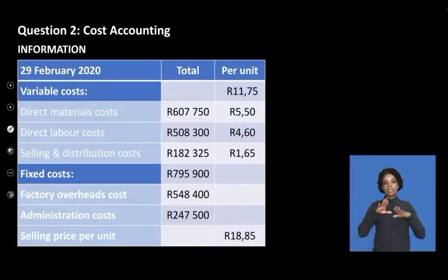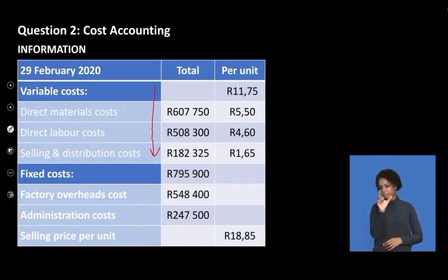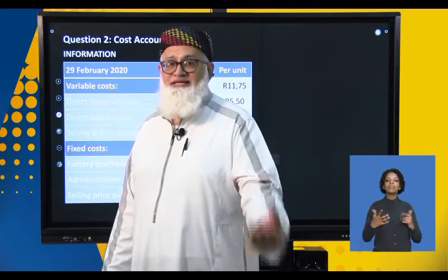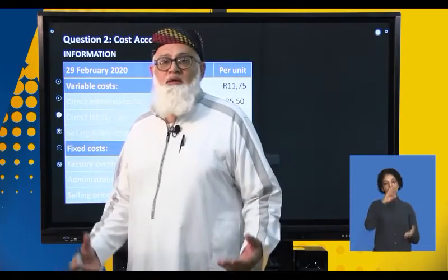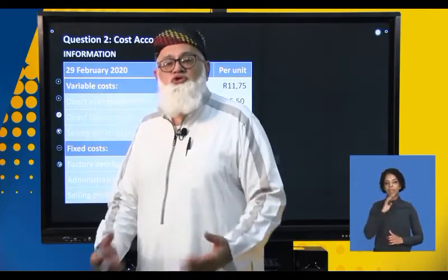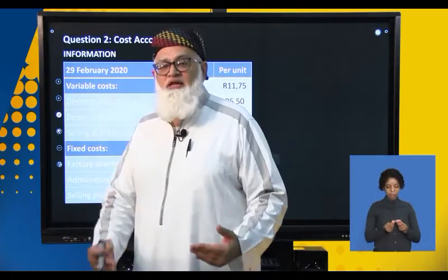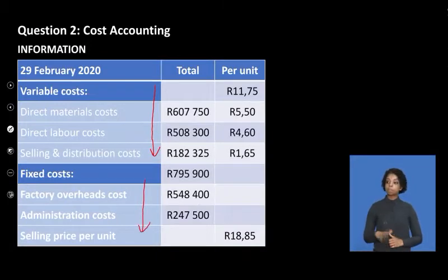This is the information we have. Our variable costs — know what they are. A variable cost is a cost that varies with the levels of production. As production increases, variable costs increase. For example, as your production of leather bags increases, you use more material — those are variable costs. Then you get your fixed costs, which remain fixed regardless of the levels of production.